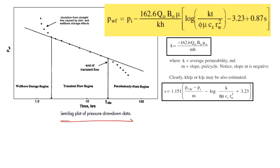On a semi-log plot of flowing bottom hole pressure versus time, we can see a straight line. Initially there is an early-time region, then a mid-time region, and a late-time region. In the early-time region there is an obvious deviation from the straight line.